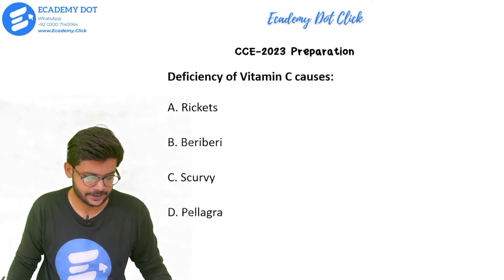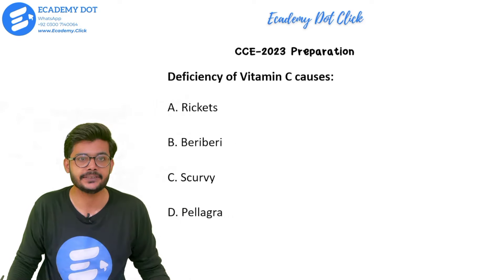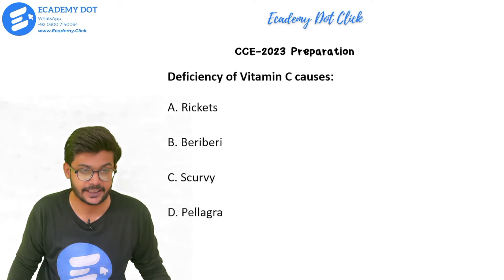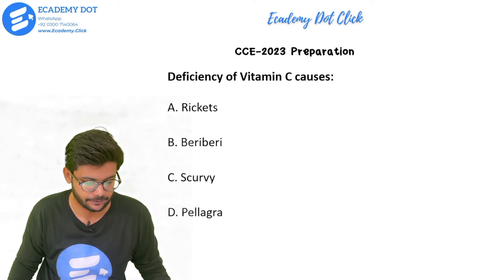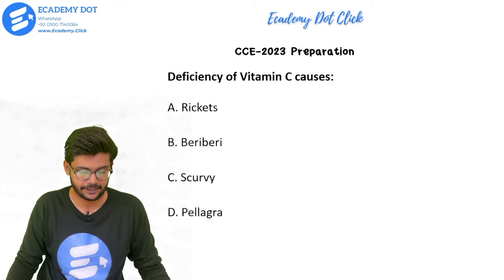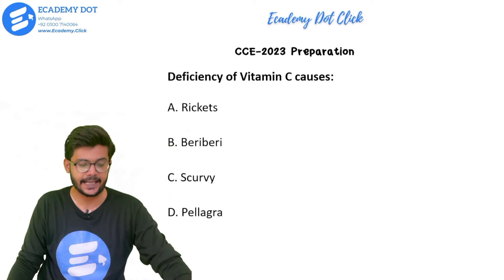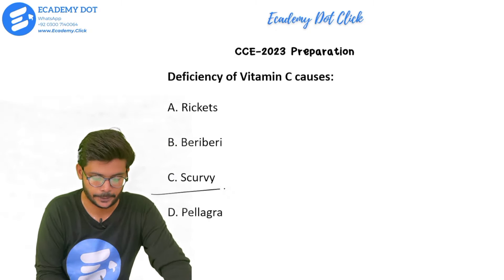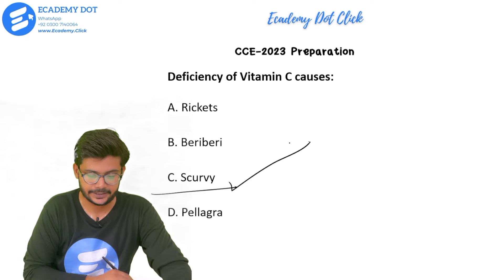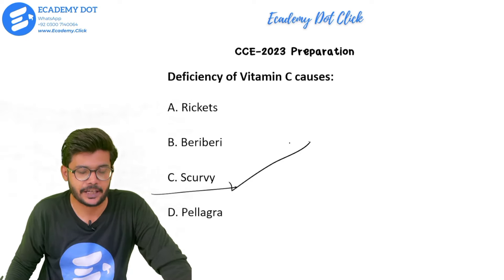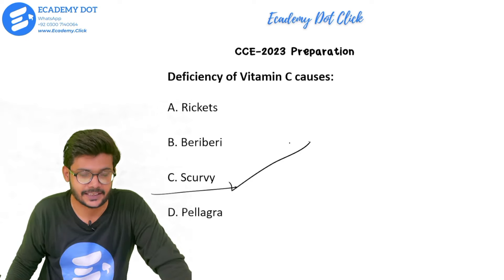Deficiency of vitamin C causes which disease? Options are rickets, beriberi, scurvy, or pellagra. The right answer is option C, that is scurvy. Deficiency of vitamin C causes scurvy.